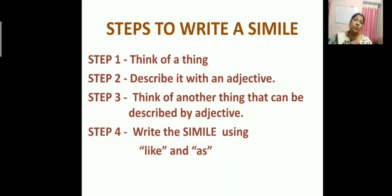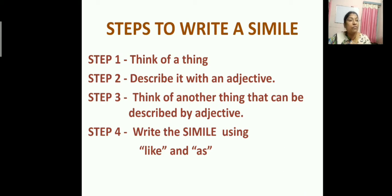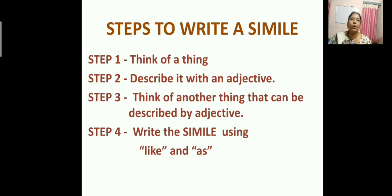What are the different steps which we have used to write a simile? First, we think of a thing. Then we describe that thing with an adjective. What is the thing we took first? Knife. What adjective did we give? Sharp. Third step: think of another thing that can be described by the same adjective. What other thing did we take? Broken glass. Finally, we write the simile using 'like' or 'as'. Is this clear children — how to write a simile?